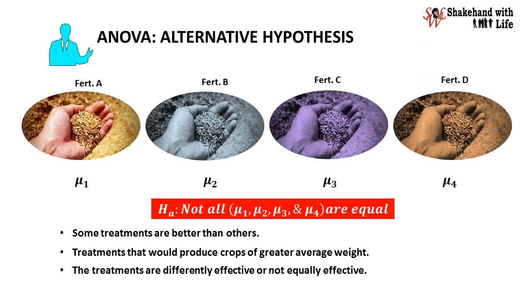Here, better refers to those treatments that would produce crops of greater average weight. Hence, the alternative hypothesis states the treatments are differently effective or not equally effective.